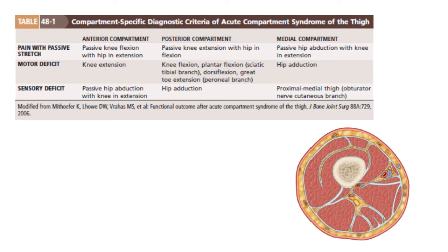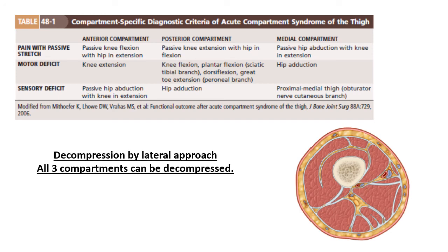If the posterior compartment is involved, pain is on passive knee extension, knee flexion is affected, and sometimes great toe dorsiflexion is affected. Sensory deficit is around L5 and S1. Medial compartment involvement is quite rare — adductors are involved, so pain on passive stretch is with abduction. To decompress the thigh, a lateral approach over the lateral intermuscular septum separating vastus lateralis and hamstrings is used to decompress the anterior and posterior compartments. Involvement of the medial compartment is rare; when decompressing it, care must be taken not to injure the neurovascular structures.